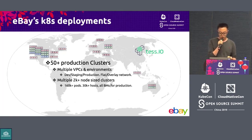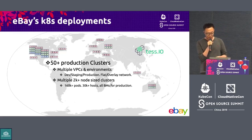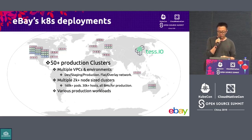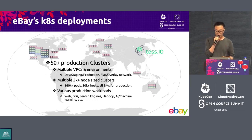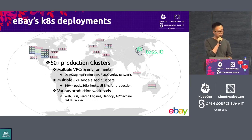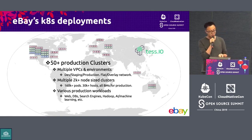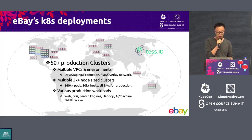Most of them are bare metals because we only run bare metals for production. We have so many different kinds of workloads running on Kubernetes now — web services, databases, search engines, Hadoop, AI and machine learning as well. At the previous European KubeCon, I had a talk about our practices to run high-performance workflows and performance training. If you're interested, you can find the slides and presentation online.